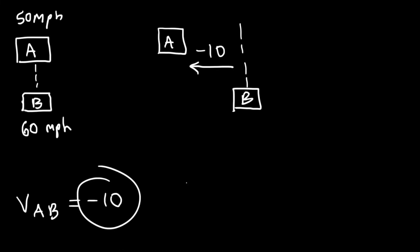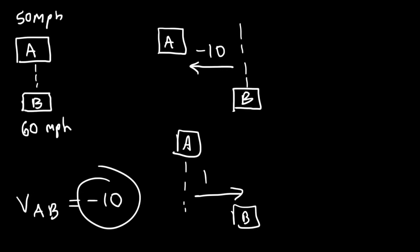In the other example where a was the reference frame, a person on train a looking at the person on train b sees that person moving 10 miles per hour away from them towards the right. So that's why the relative velocity of b with respect to a is positive — the person on b is moving towards the right, away from person a. Hopefully this helps you understand the sign of relative velocity and what it means.